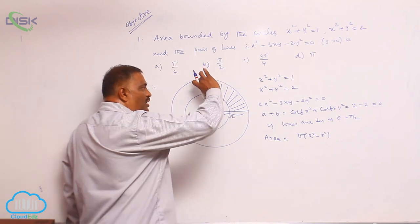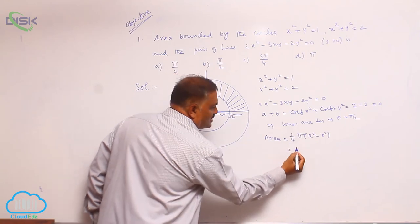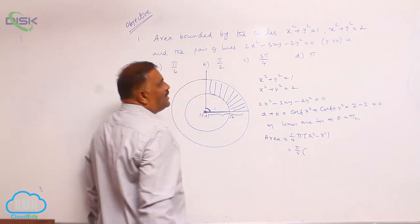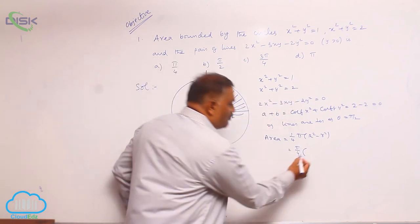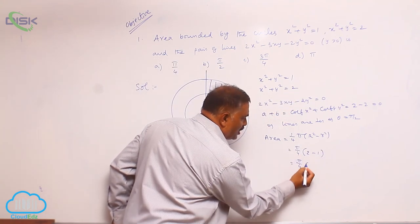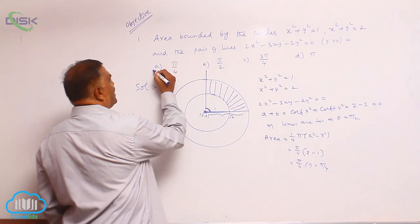Now, we require only one fourth of the total. That is why we write one fourth of this is pi by 4 into - now capital R square is bigger circle - 2 minus 1. This is pi by 4 into 1, that is pi by 4. That is why option 1 is correct.